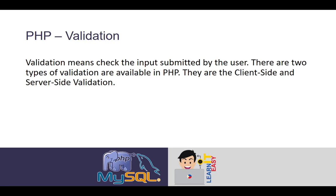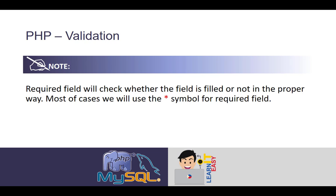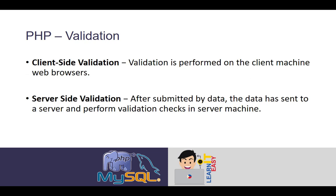Validation means checking the input submitted by the user. There are two types of validation available in PHP: client side and server side validation. Note that a required field will check whether the field is filled or not. In most cases, we use the asterisk symbol with a red font color to indicate a required field.